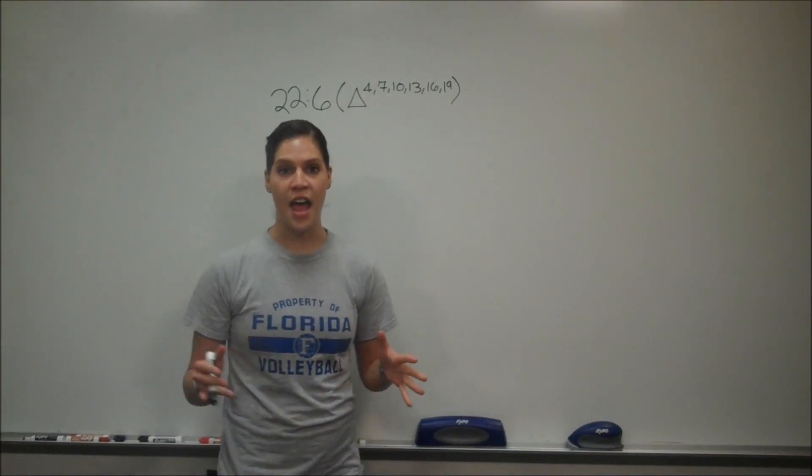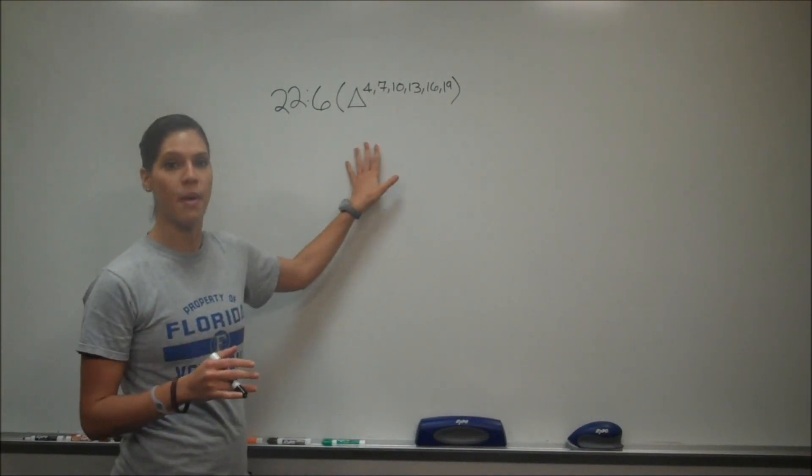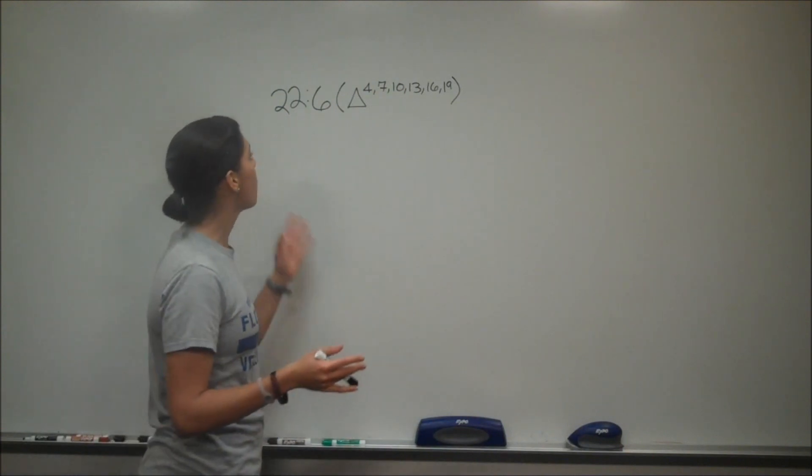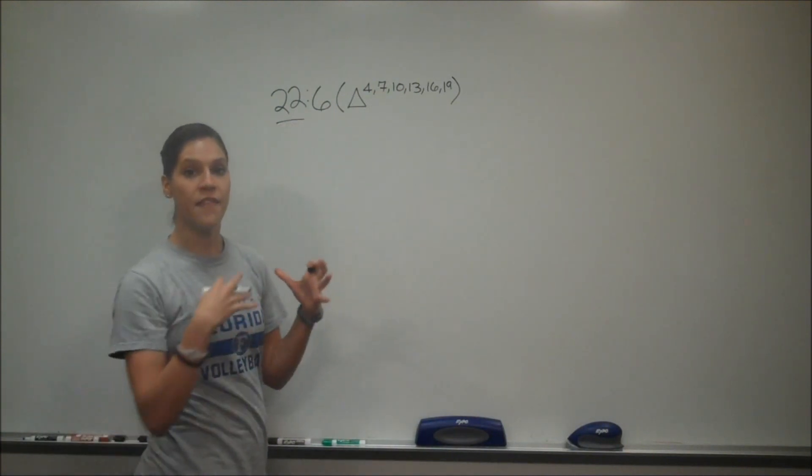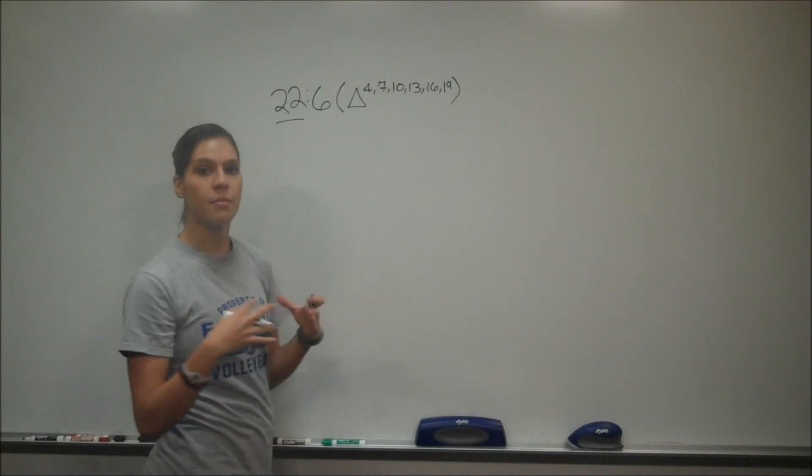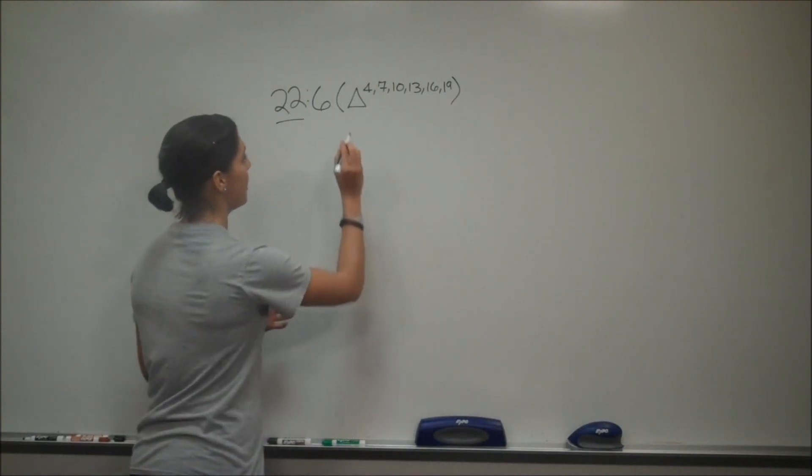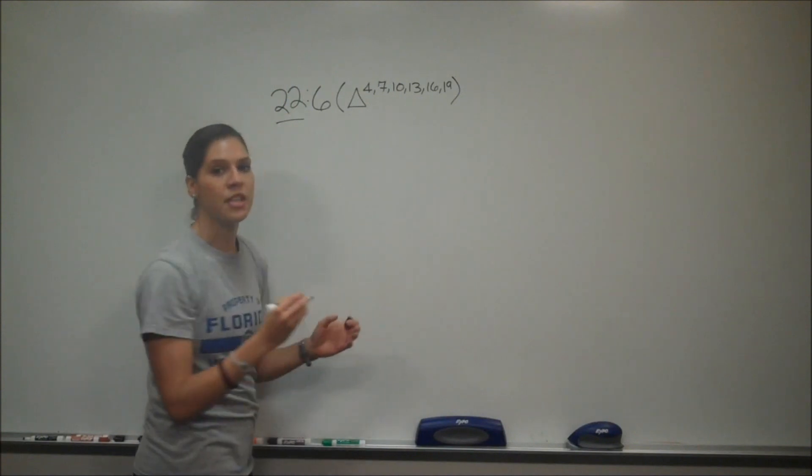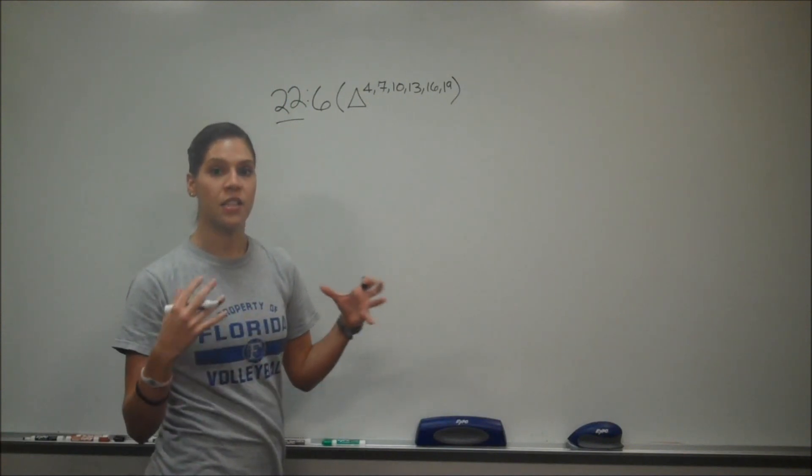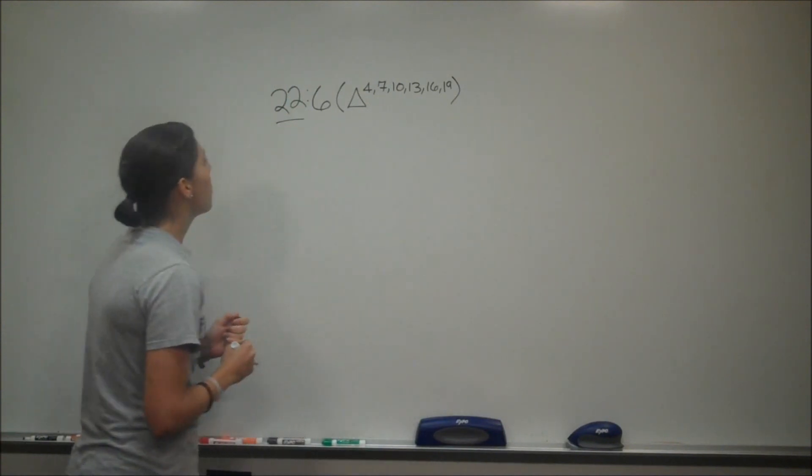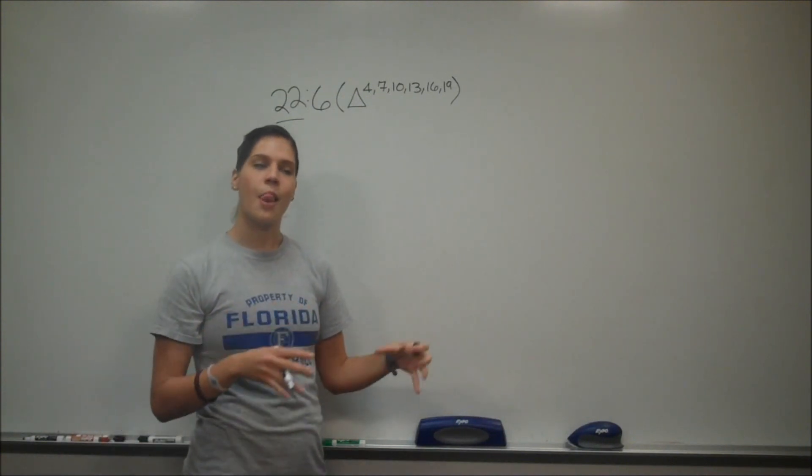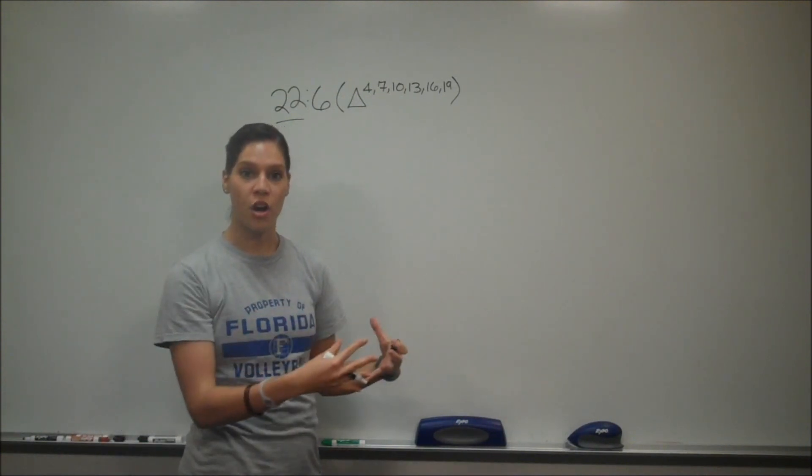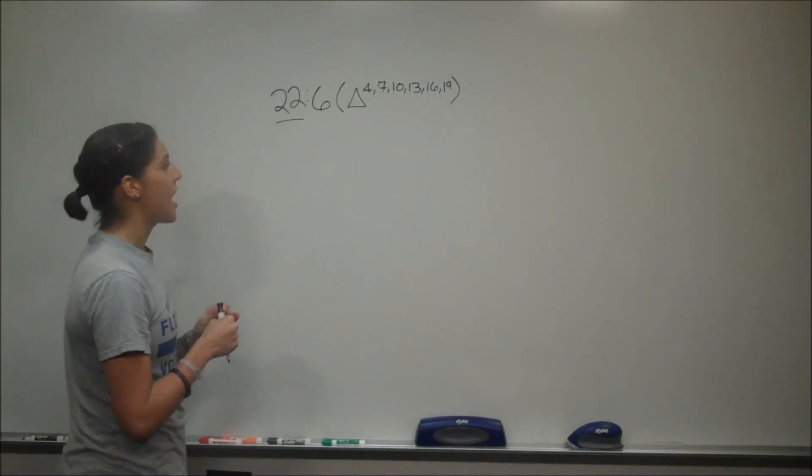Number one states to draw a fatty acid with this format. Before you begin, you need to know what this format means. The 22 represents the number of carbons in the fatty acid. The 6 is the number of double bonds in the fatty acid. And this delta, with the following numbers, represents where in the fatty acid double bonds reside. A fatty acid is comprised of a carboxylic acid and hydrocarbons, so you would start off your fatty acid with this.